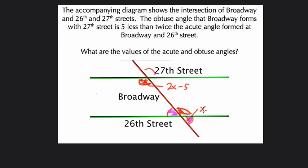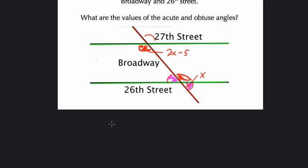So that means that this angle x and 2x minus 5 add up to 180. So let's see what happens. What's the value of x? x plus 2x minus 5 equals 180 degrees. That's 3x minus 5 equals 180 degrees. Add 5 to both sides.